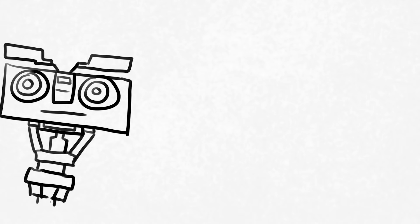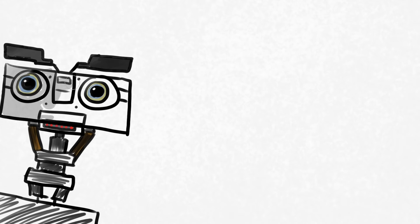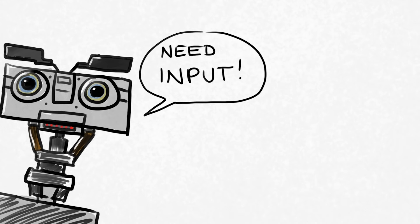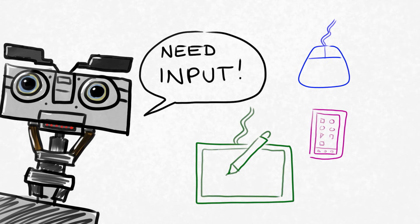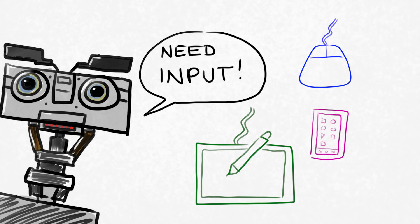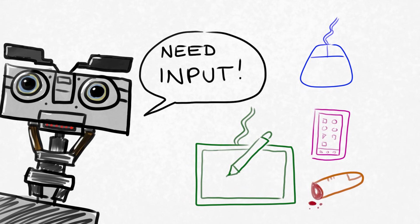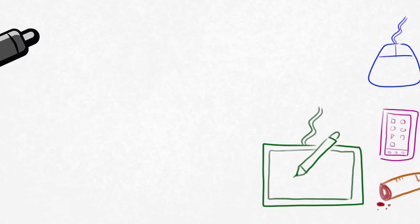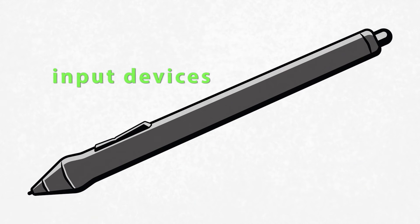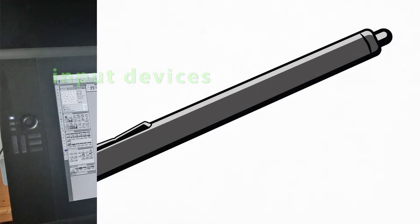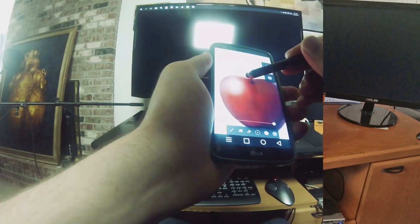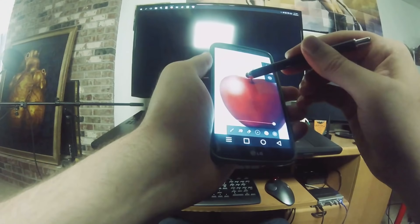Third on the list of things that you'll need is an input device. That could be a mouse, a tablet, a mobile device that has a pen built in, or your finger on your tablet. Regardless of which you choose, you'll need something that can function as your pen. I'm going to break this down into two categories: desktop and mobile.